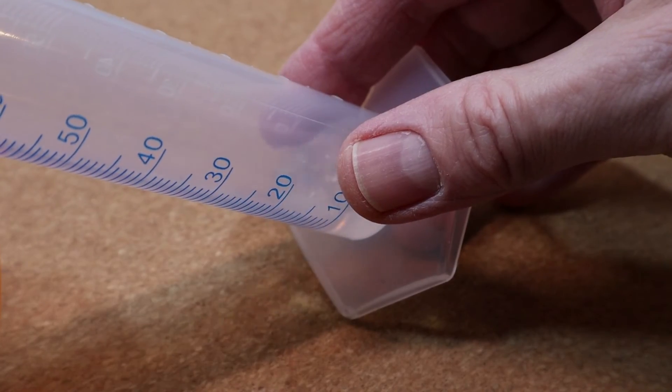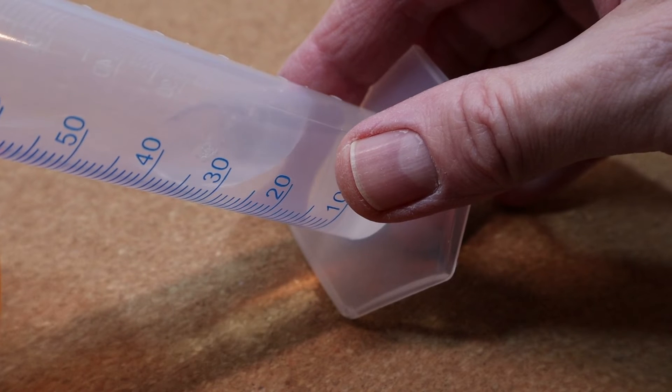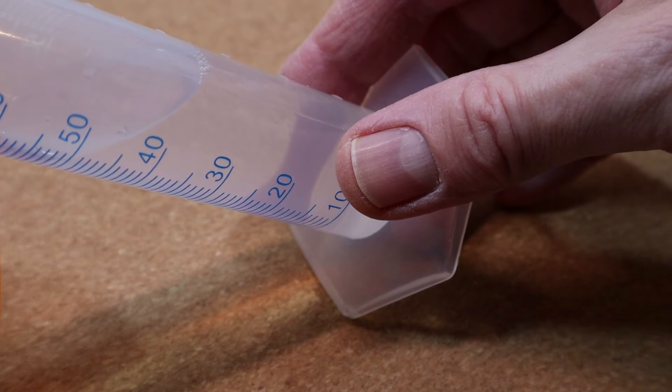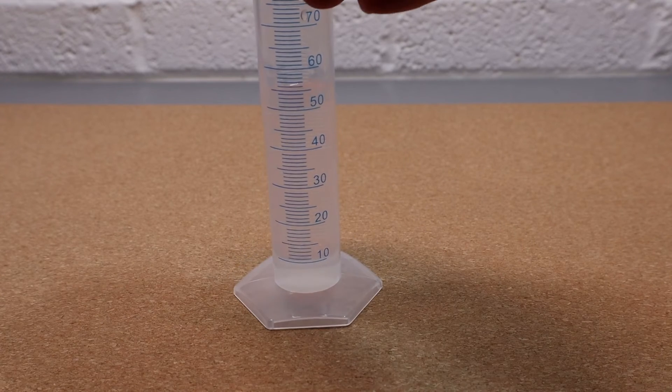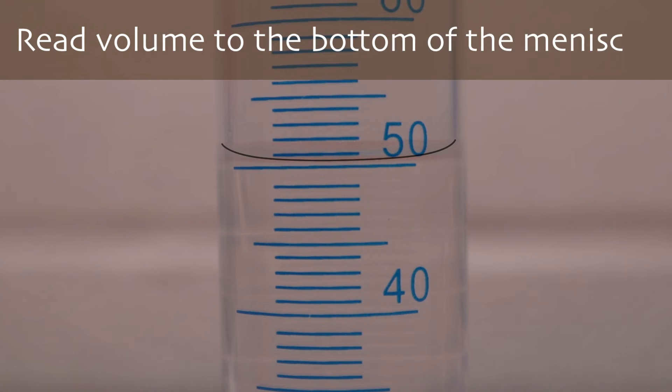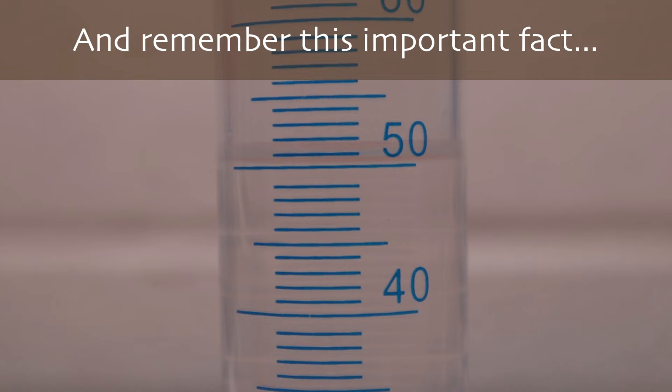Anyway, as the stone is lowered into the Eureka can, water is displaced, pours out of the spout, and is then collected in a measuring cylinder. The volume of water displaced and then collected in the measuring cylinder is 50.5 milliliters, so the volume of the stone is 50.5 cubic centimeters.